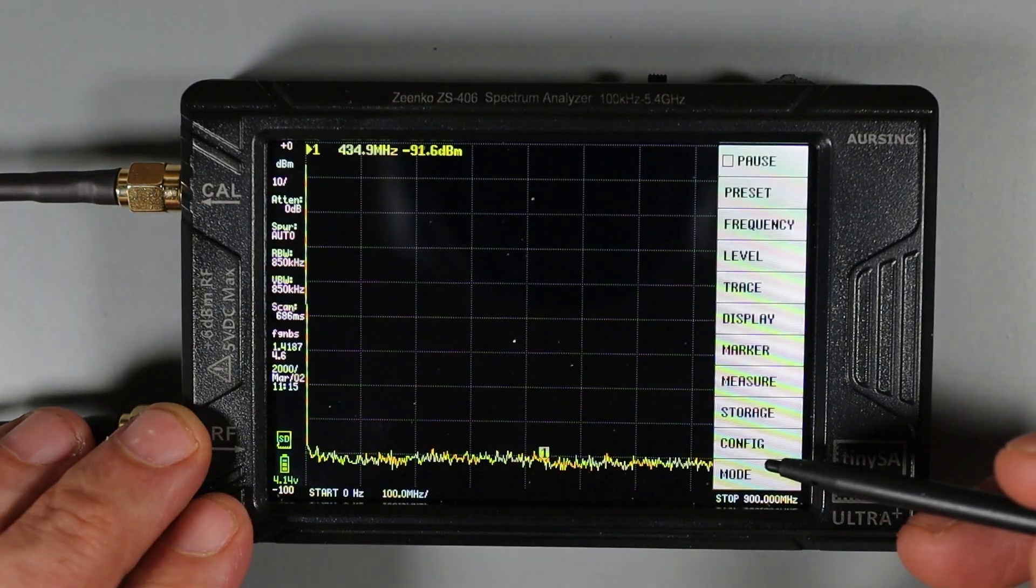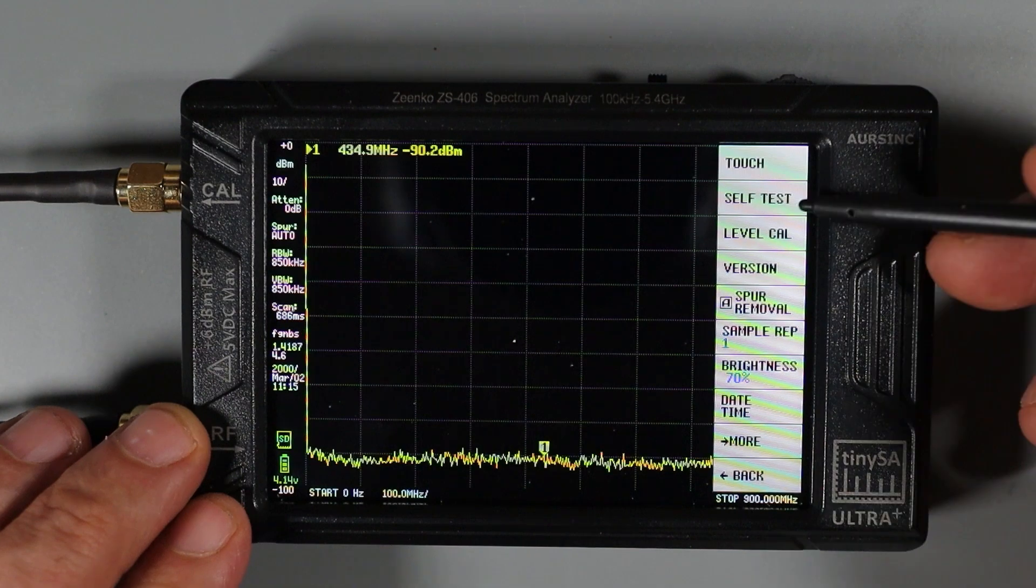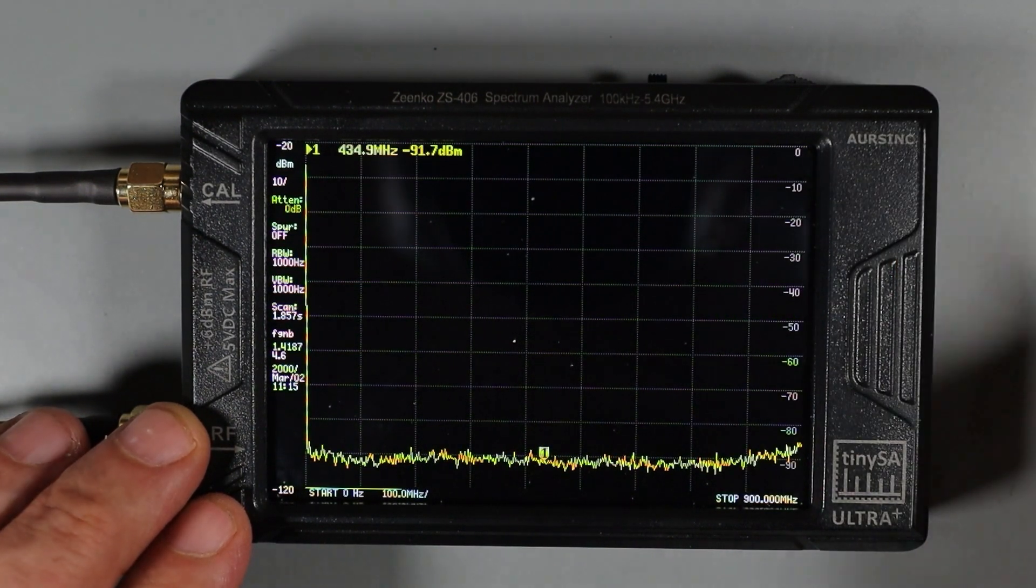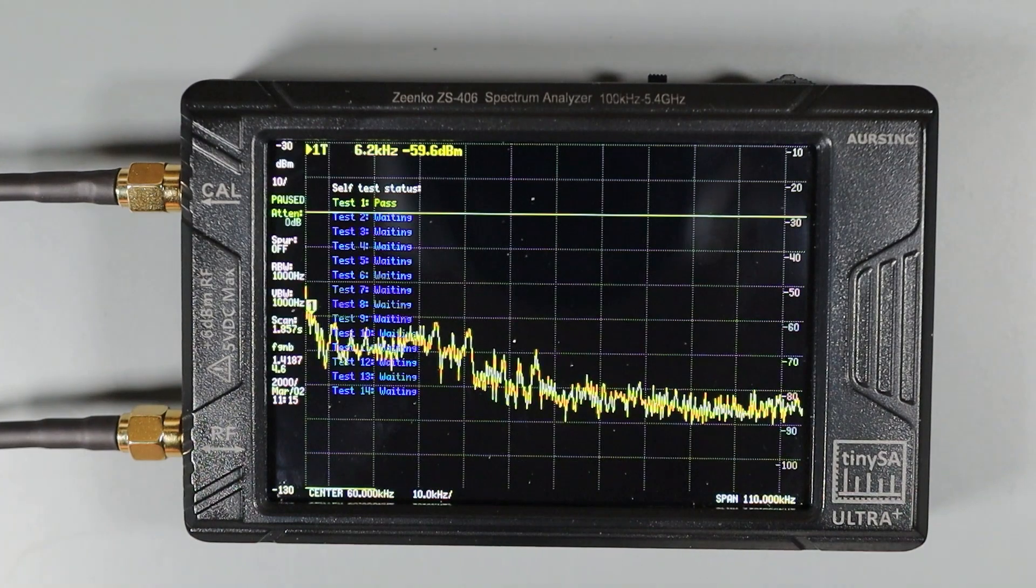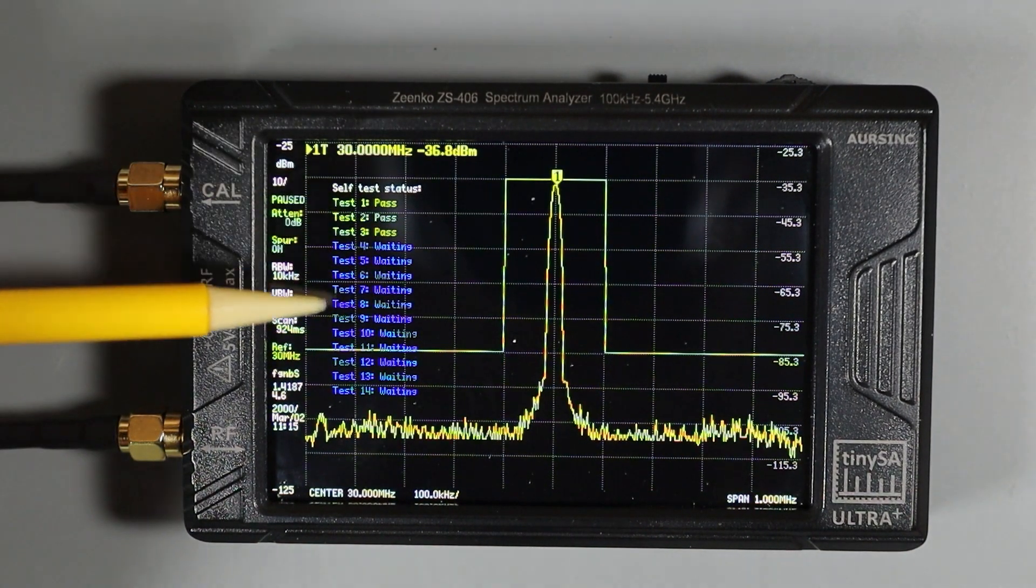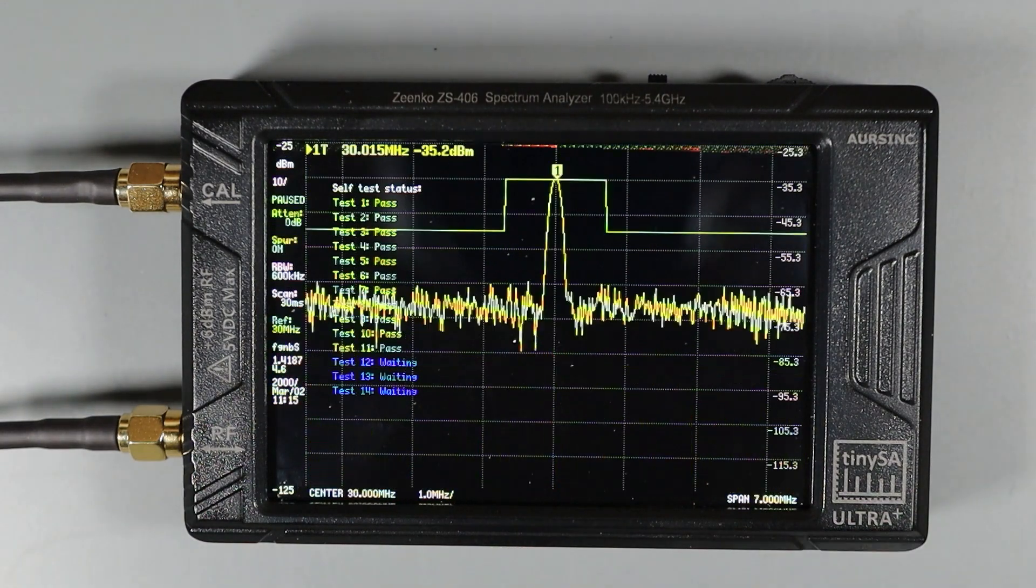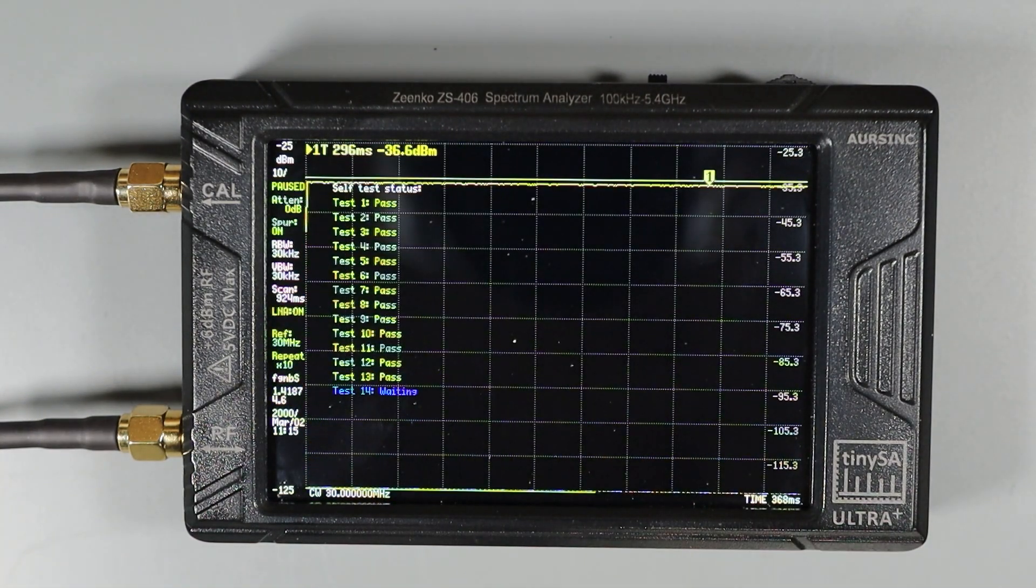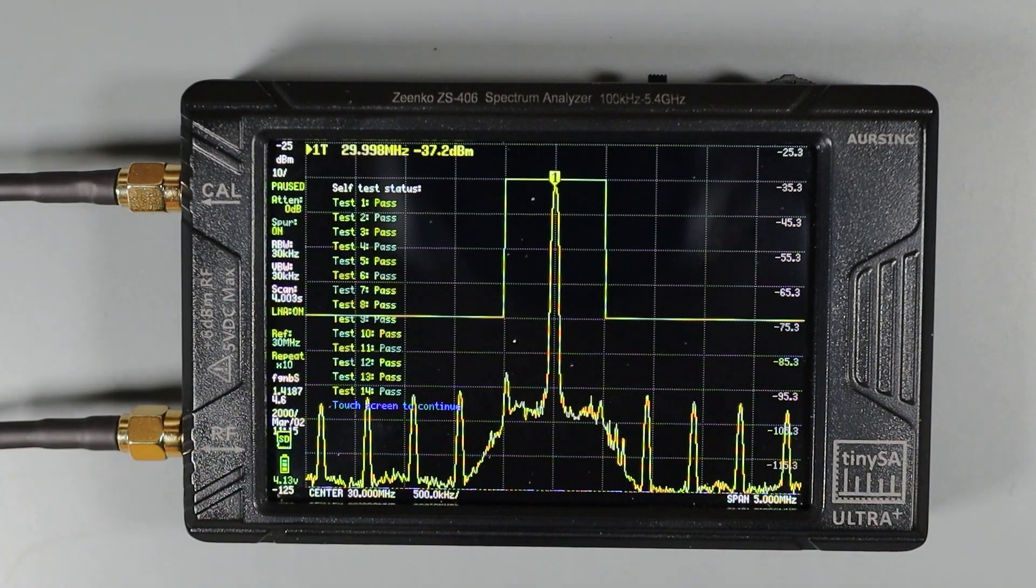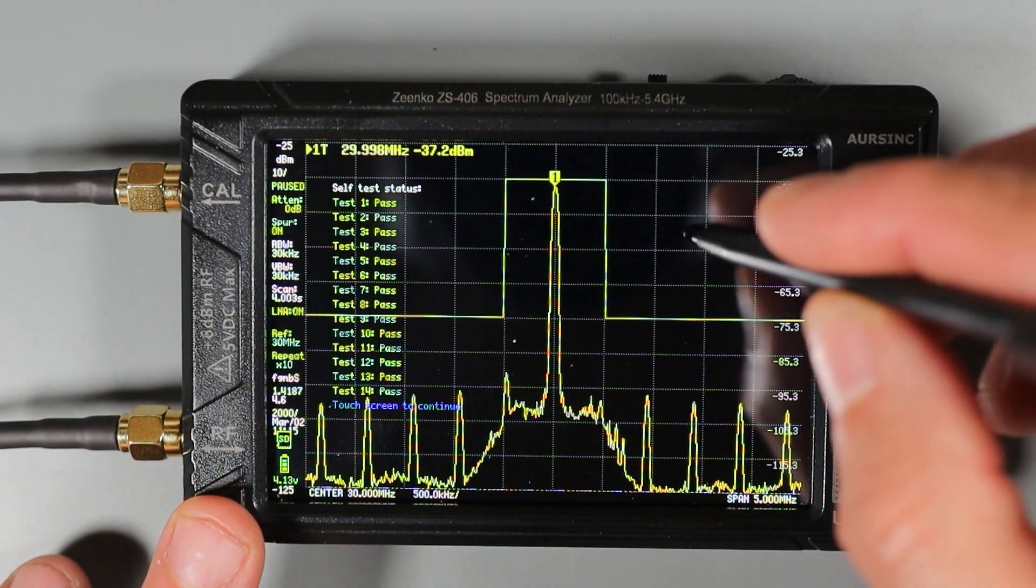I'm going to go into the top level menu and select config. And then from the config menu, I'm going to select self-test first. And you'll see that the TinySA will proceed through a series of self-tests and give us a status of the test over here on the left. Now that the test is complete, you can see mine passed all of its tests.